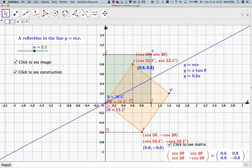And then these are the particular values for this particular angle of 26.6, which you get when m is equal to 0.5.